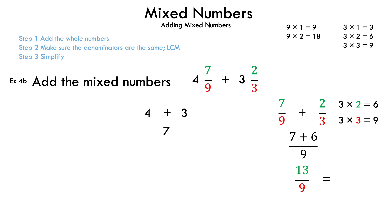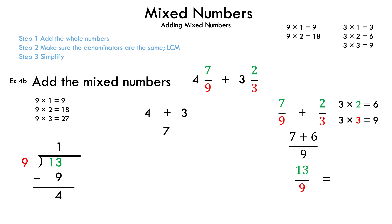Once again we have an improper fraction, so we use long division to find the mixed number. Write down the multiples of 9, find the one closest to 13 without going over — and that is 9. We use our two factors of 9 and 1: write the 1 above, 9 below, subtract 13 and 9 to find our remainder, which is 4. We use the 9, the 1, and the 4 as our mixed number: 1 and 4/9. We combine it with the 7: 7 plus 1 is 8, and our answer is 8 and 4/9 — the same answer as 4a, just a little different.